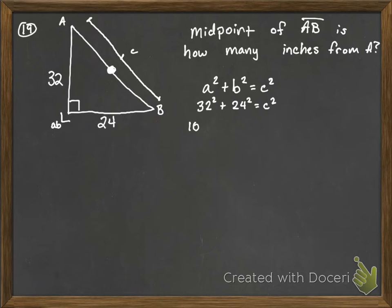So I got to figure out what 32 squared is, and that's 1,024 plus 24 squared is 576. That's equal to C squared. So I'm going to add these two together and I get 1,600.